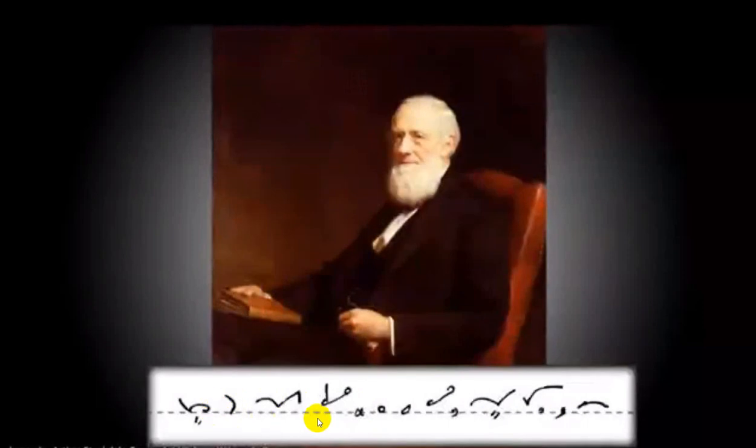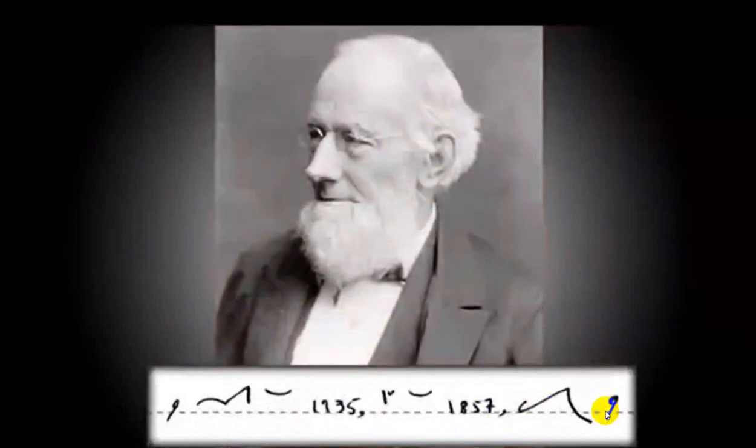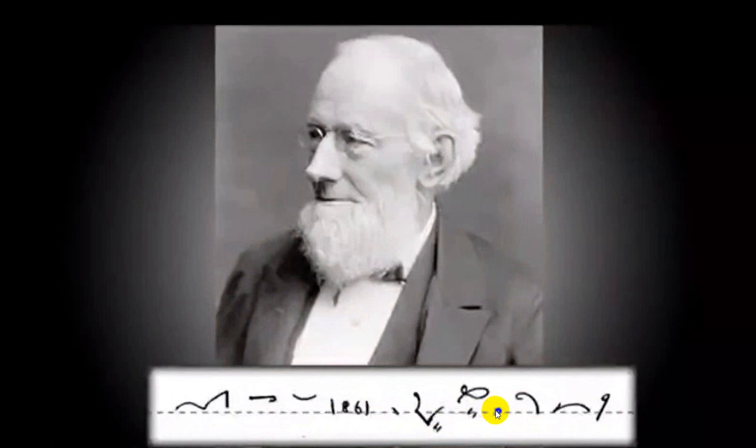Pitman was married twice. His first wife, Mary Holgate, whom he married in 1835, died in 1857, whereafter he married again in 1861 to Isabella Masters, from whom he had two sons, Alfred and Ernest.